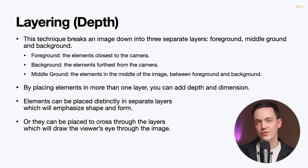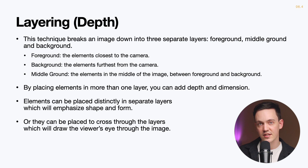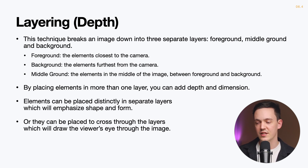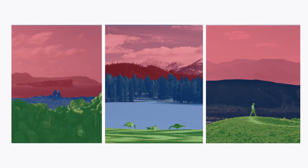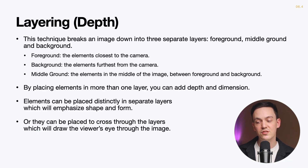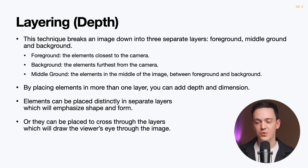The compositional technique of layering breaks an image down into three separate layers known as foreground, middle ground, and background. Foreground elements are closest to the camera, background is the furthest, and middle ground elements are in between. By placing elements in more than one layer, you can add depth and dimension to your images. One of my favorite ways to use this technique is to find compositions that create distinctly separate layers, emphasizing shape and form. Another way is to use elements that cross through the layers to draw the viewer's eye through the image.